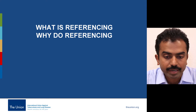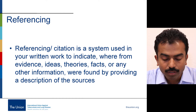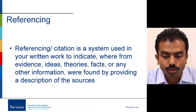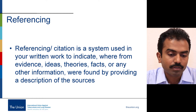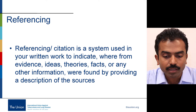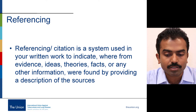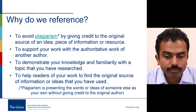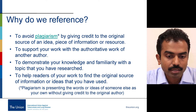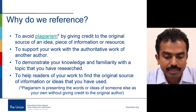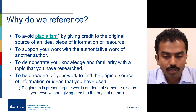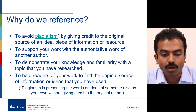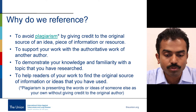So what is referencing and why should we do it? Referencing or citation is a system used in your written work to indicate the source of the evidence, the ideas, the theories, facts, or any other information that's not yours. It's a way of giving credit where it is due. We reference basically to avoid plagiarism, which is presenting others' ideas as your own. In referencing, you give credit to the original source of an idea, a piece of information, or resource.